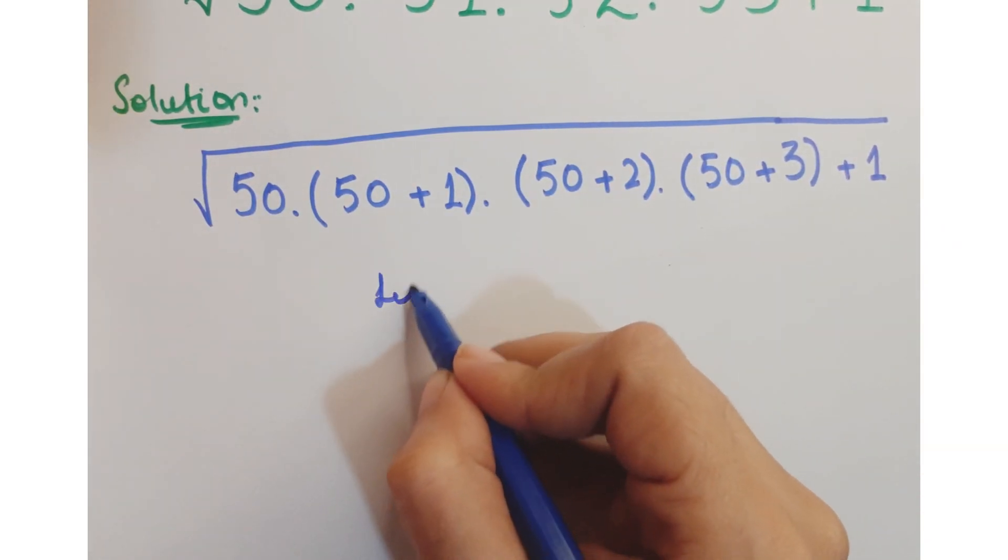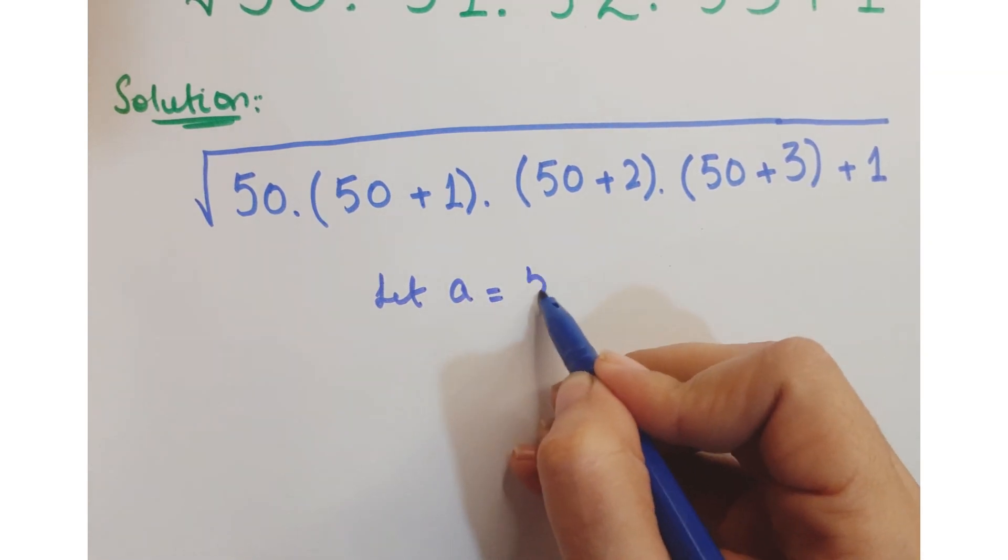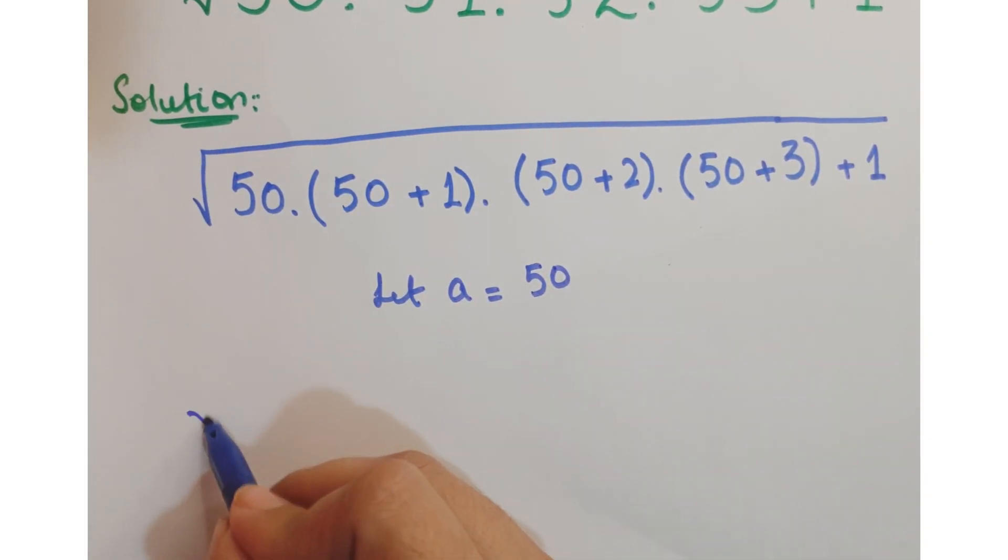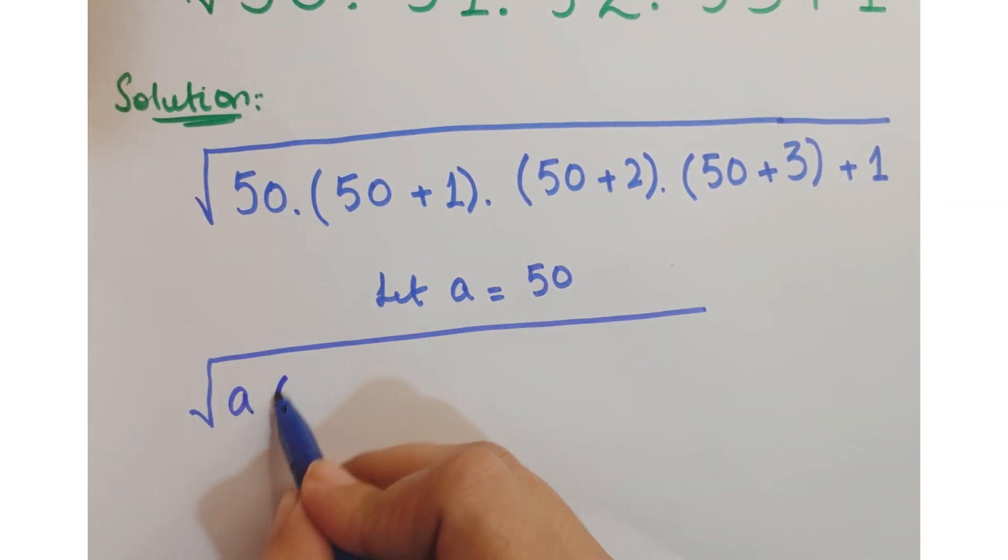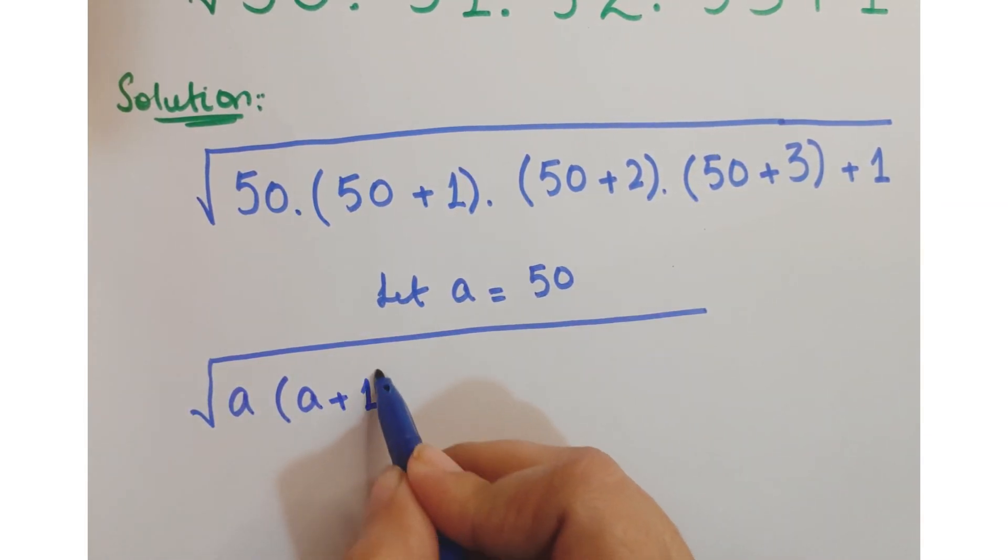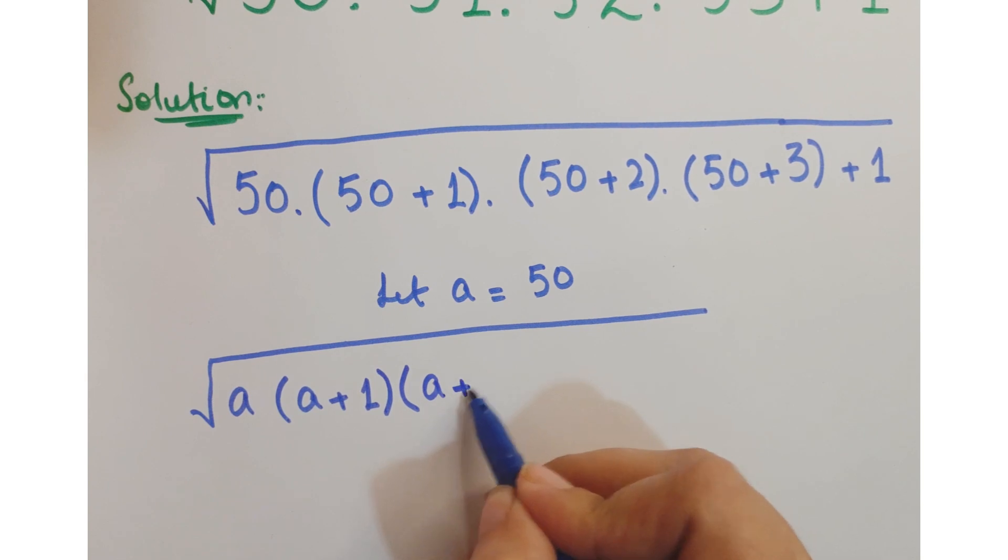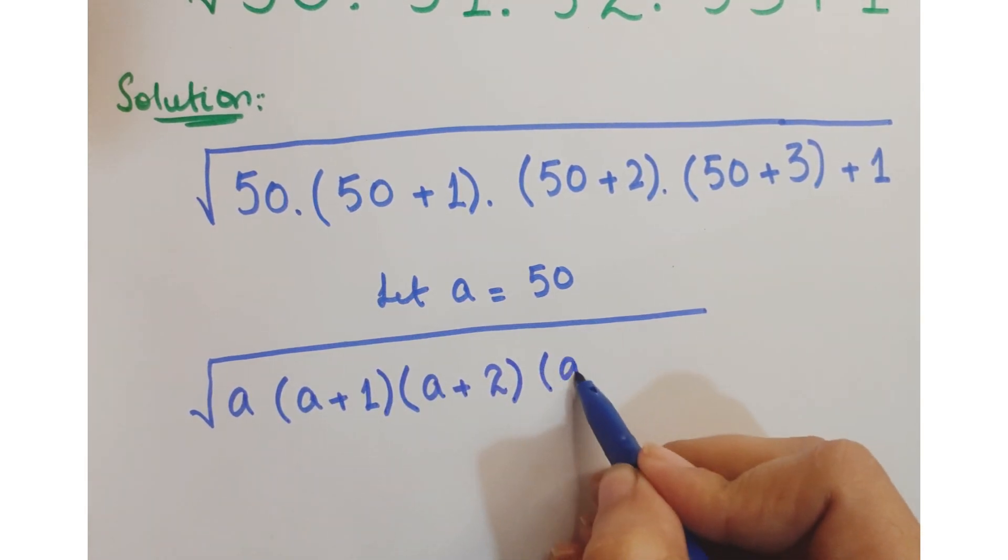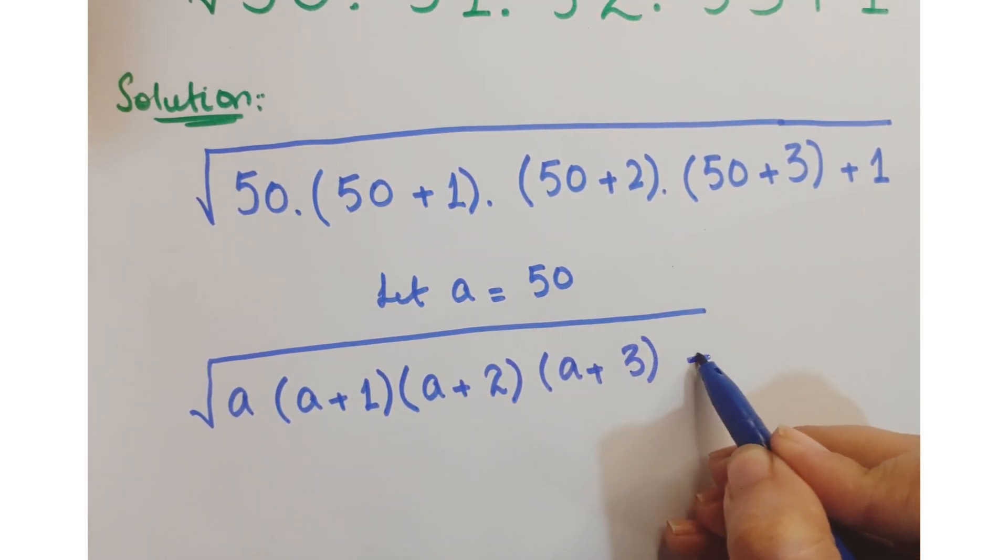Now, let's assume that a equals 50. So we have a into (a+1) into (a+2) into (a+3) plus 1.